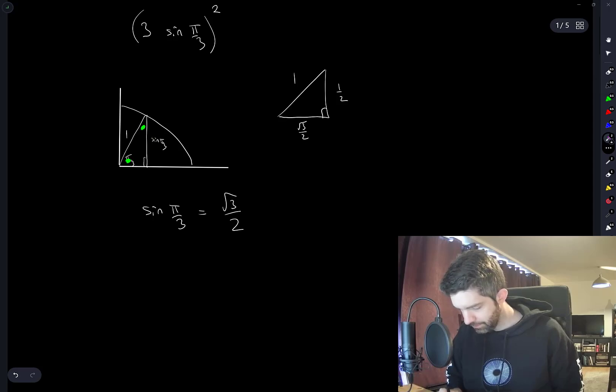So if this angle is pi over 3, that angle is pi over 6. That's going to be the longer of the two sides. Yeah, okay.